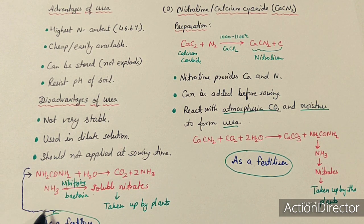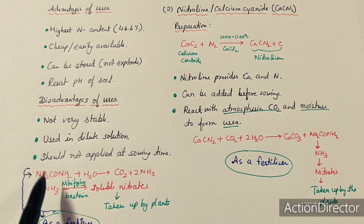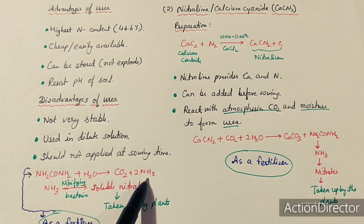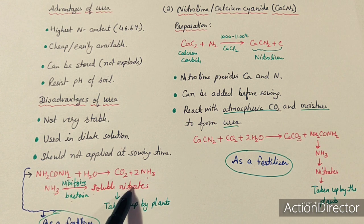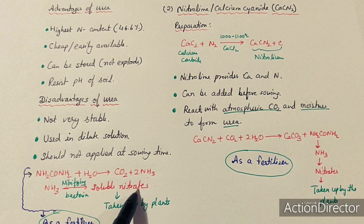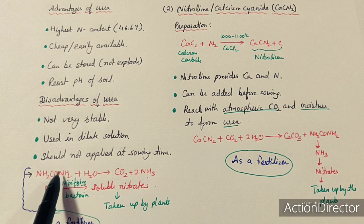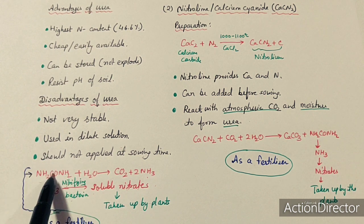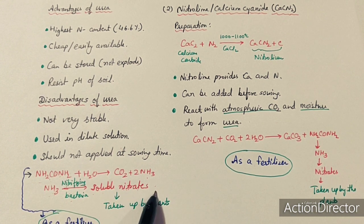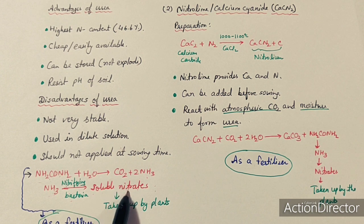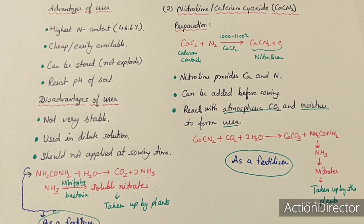How urea acts as a fertilizer in soil: urea reacts with water to form ammonia. Nitrifying bacteria then act on this ammonia and convert it into soluble nitrates and nitrites. These soluble nitrates are then taken up by the plant. Urea itself dissolves in water but the plant cannot absorb it directly; only when it is converted to ionic nitrate form by nitrifying bacteria can the plant absorb the nitrogen.